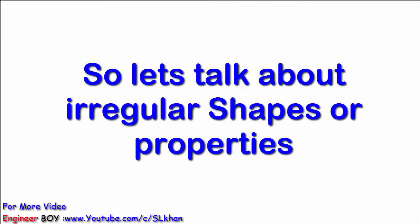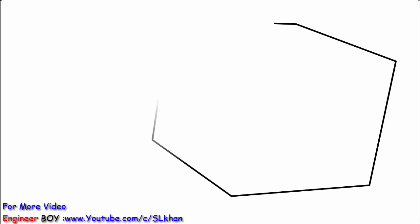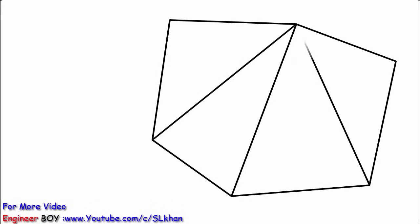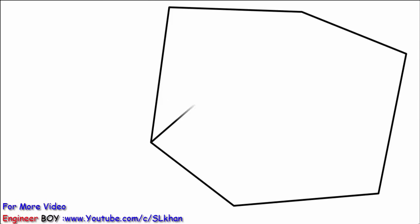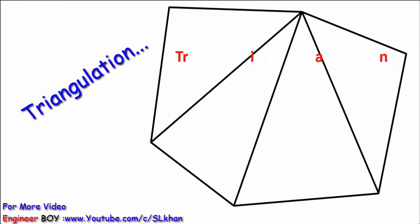Let's talk about irregular shapes or properties. Whenever you face an irregular property on site and want to work out its area, an easy way is to split the whole property into simple geometric shapes. The best thing according to me is triangulation. You have to convert or split your property into triangles and calculate area of each triangle separately.